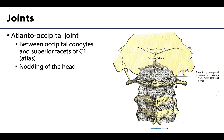Moving on to joints, starting with the superiormost — the one that articulates with the skull. The joint between the occipital condyles and the superior articular facets of C1, or the atlas, is named for Atlas holding the world on his shoulders. This joint permits nodding the head yes — think slight flexion and extension.